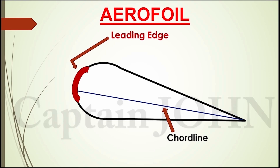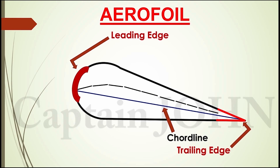The leading edge is the point at the front of the airfoil that has maximum curvature — that is, minimum radius — essentially the part of the wing that first contacts the air. The trailing edge is defined similarly as the point of maximum curvature at the rear of the airfoil. The shape of the airfoil is defined using several geometrical parameters.